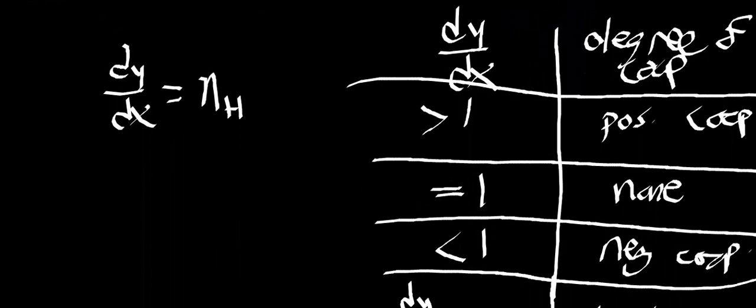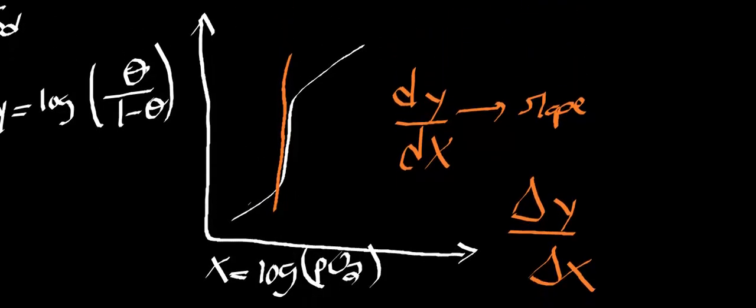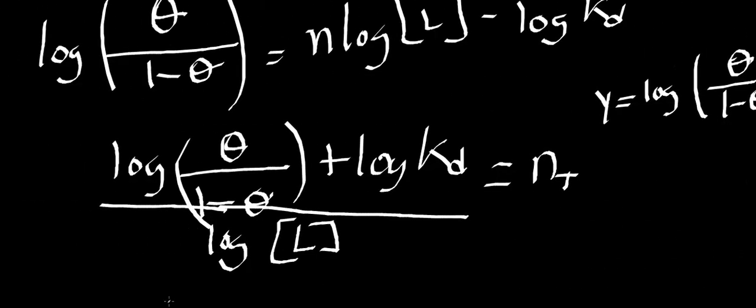In the lab, if you get a dy/dx less than 1, you should go back and verify your work since negative cooperativity is very rare. If you're using hemoglobin and generate a Hill plot, you should expect positive cooperativity. Many proteins have no cooperativity and should give a value around one. I hope this video gave you an intuitive sense of Hill coefficients and why they're useful. See you in the next video.